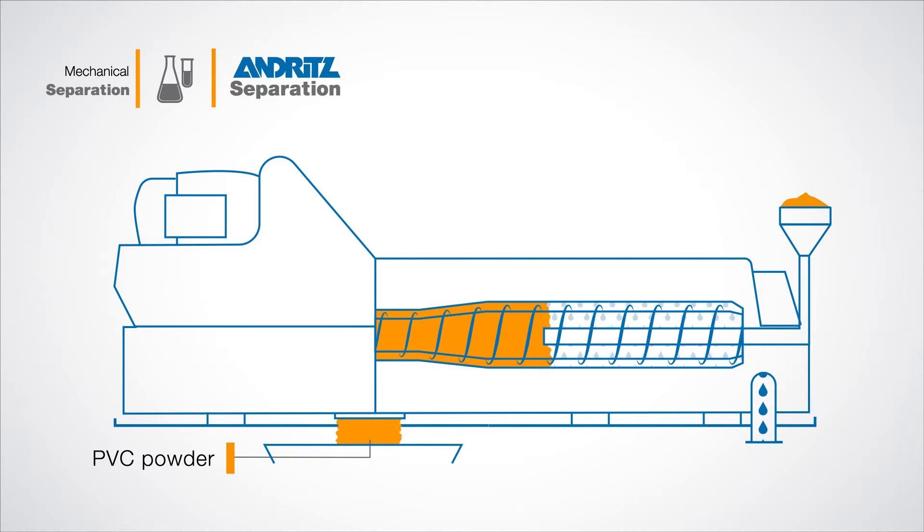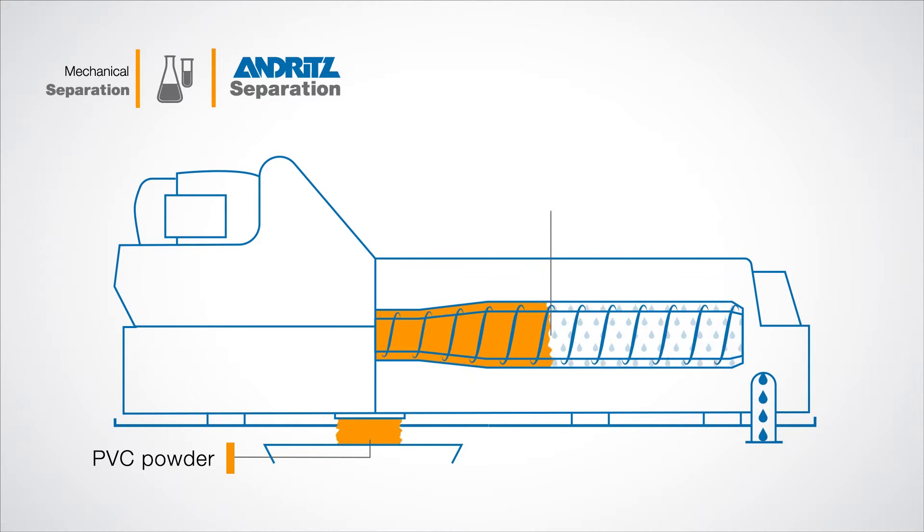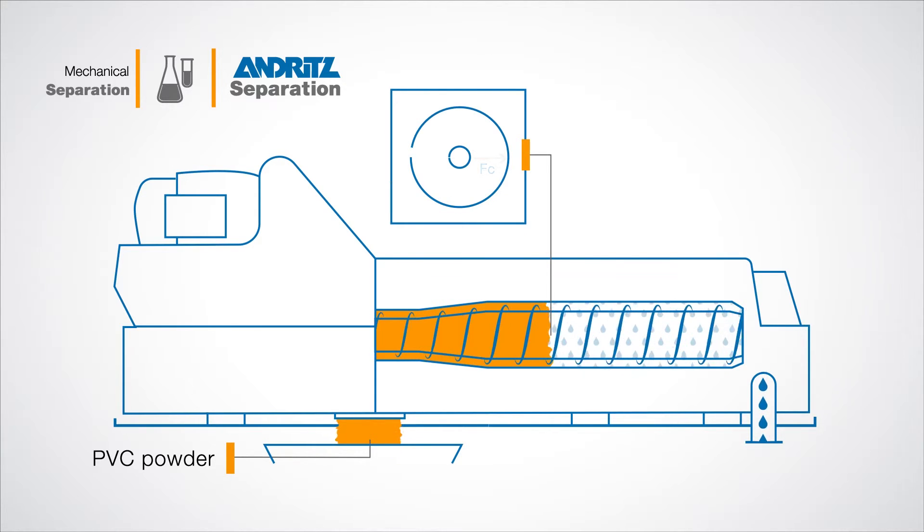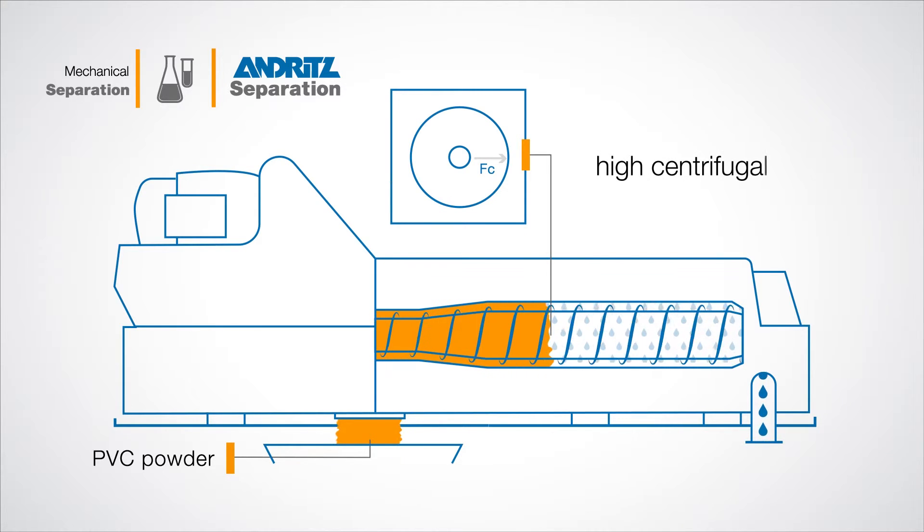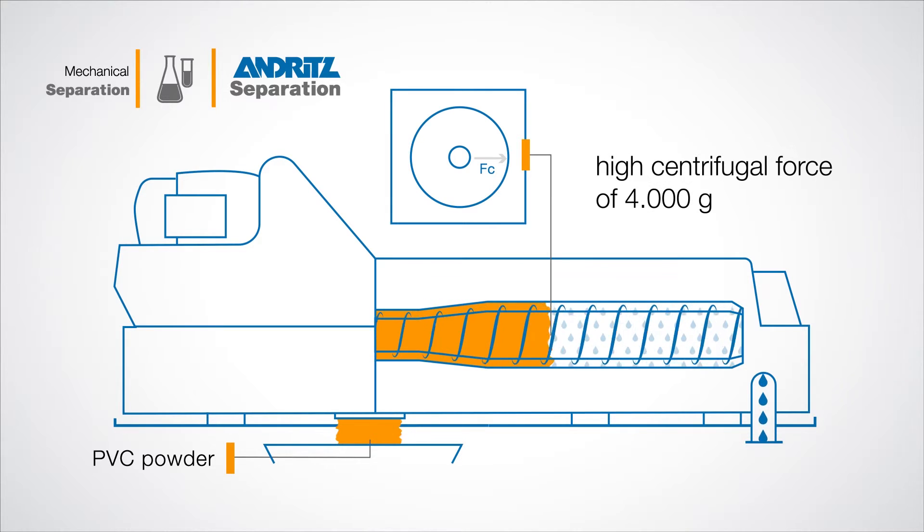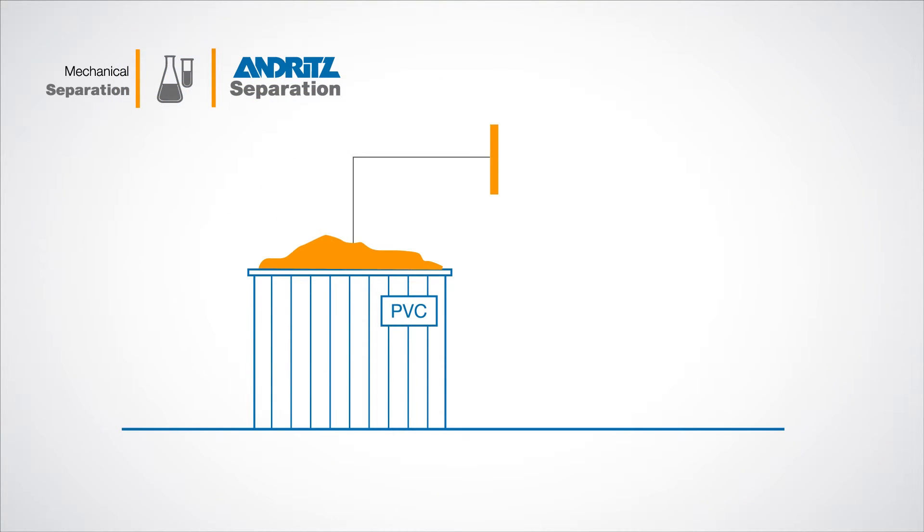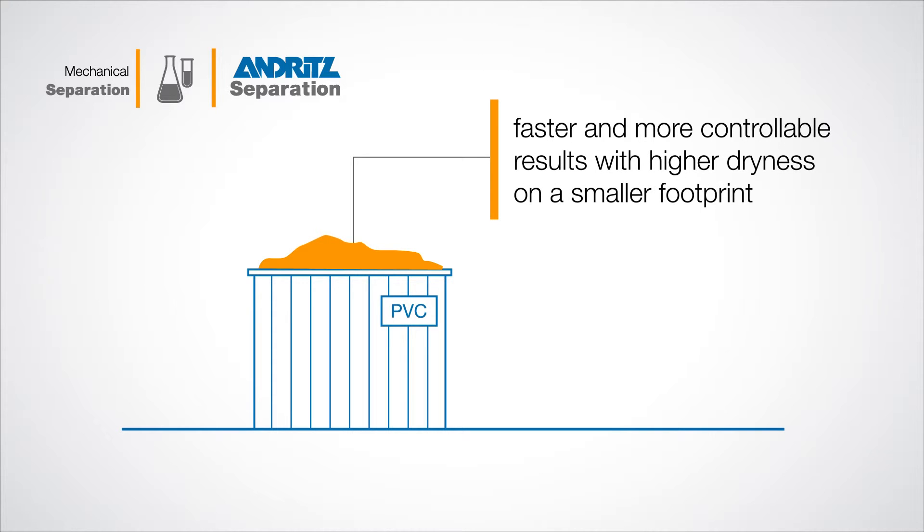Our modern decanter centrifuges increase the rate of settling through the use of continuous rotation that produces a centrifugal force of up to 4,000 Gs. This form of separation enables faster and more controllable results with higher dryness on a smaller footprint than settling tanks.